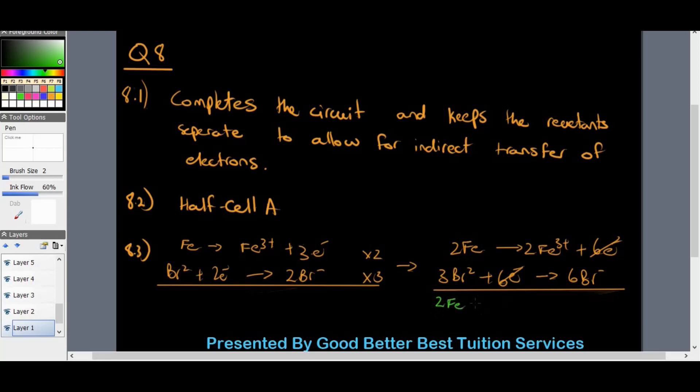And everything on the left, plus 3Br2. And everything on the right, we have 2Fe3 plus, plus 6Br to the minus. All right. And this is our final net equation.